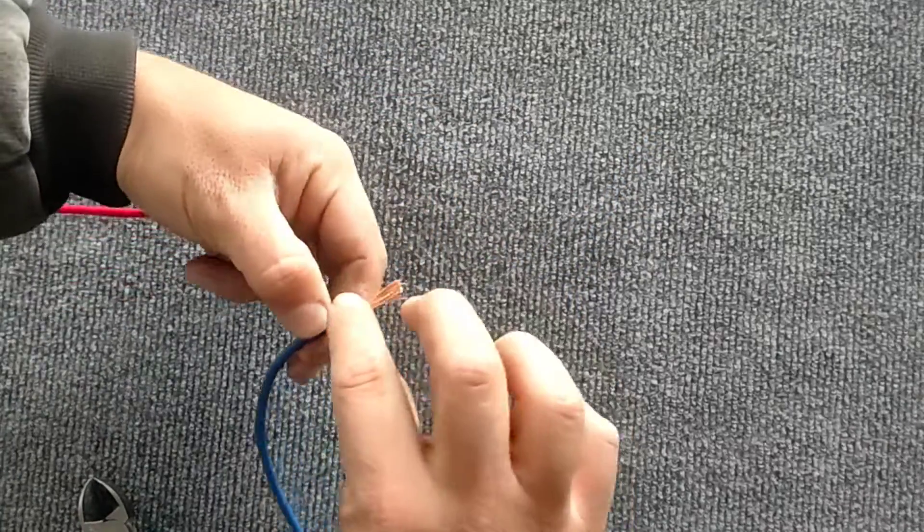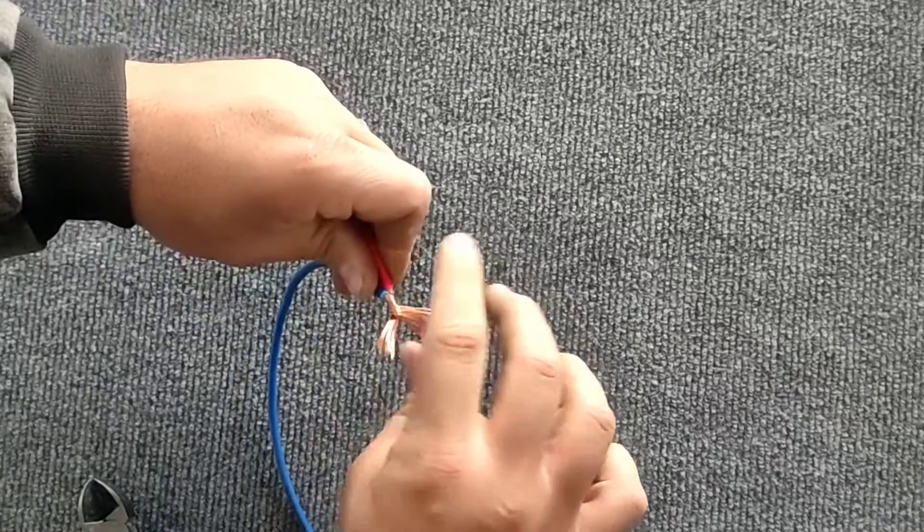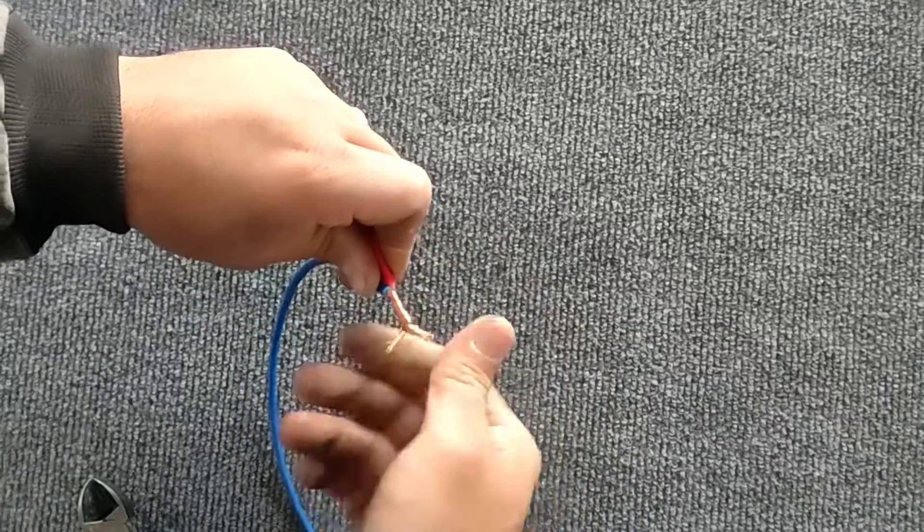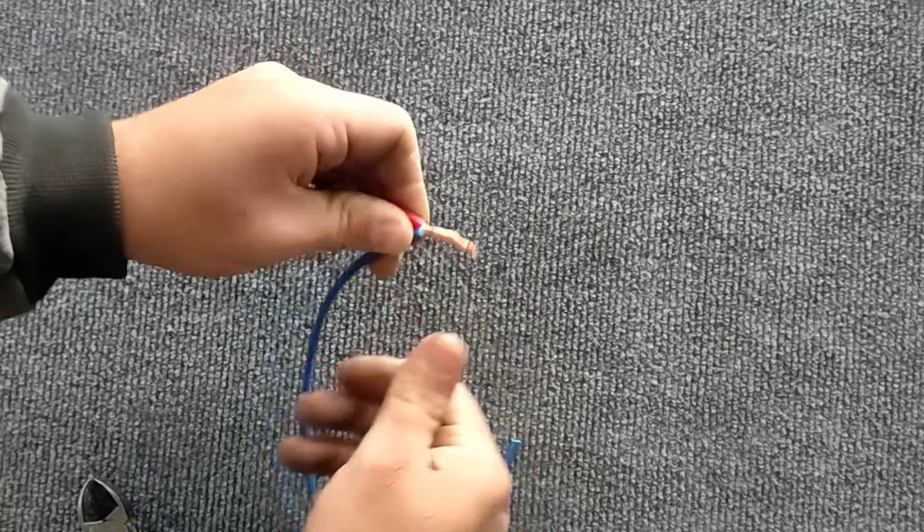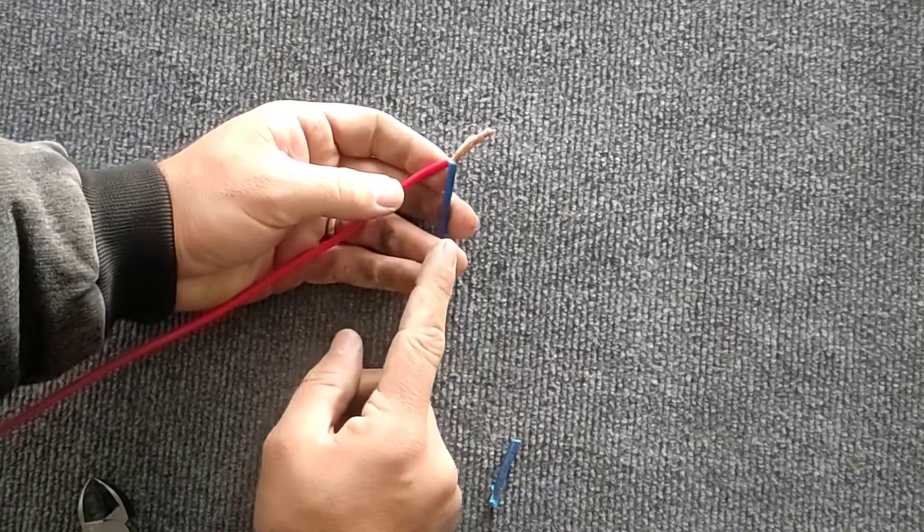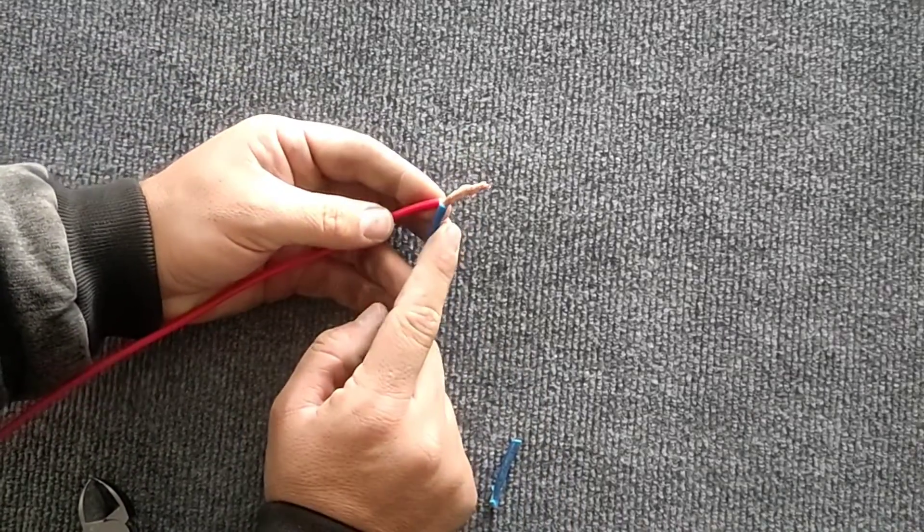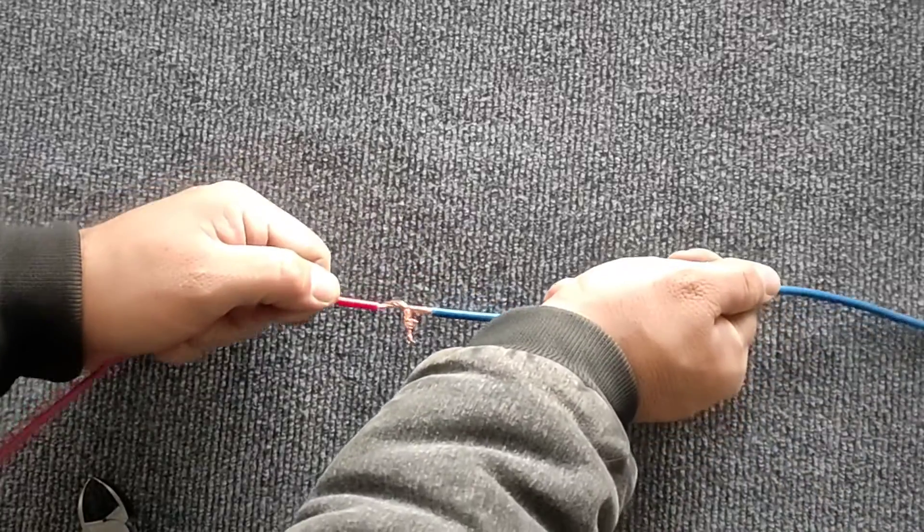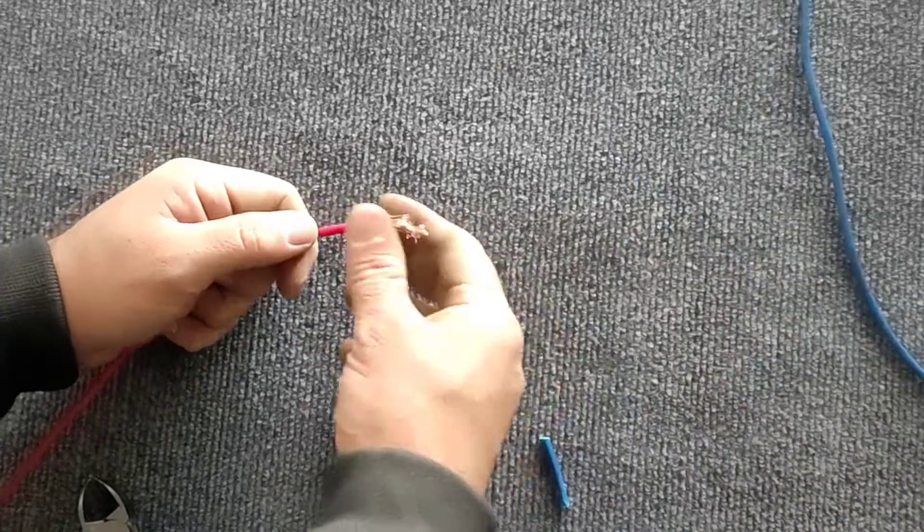The first method, which is the most famous method, twists the wire together like this. In this method, a strong connection between the wires isn't made. So it is not a suitable method.